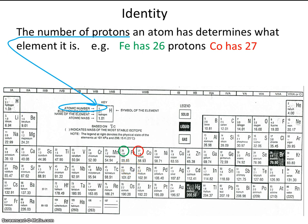Cobalt has 27 protons. So the most significant difference between iron and cobalt is the fact that iron has 26 protons and cobalt has 27 protons.